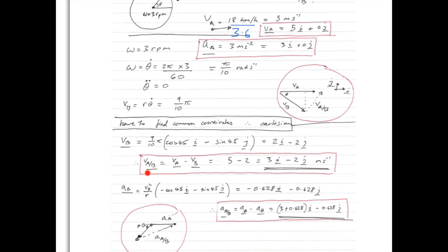So your VB component is 2i minus 2j. So then, the combination, or the addition of these two vectors, VA/B, VA minus VB, that's 5 minus 2i minus 2j. So the answer is 3i minus 2j for the relative motion, the relative velocity of A with respect to B.